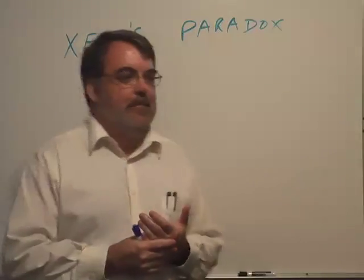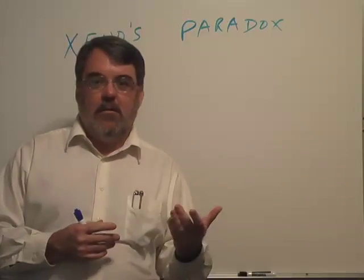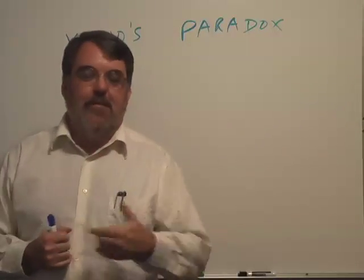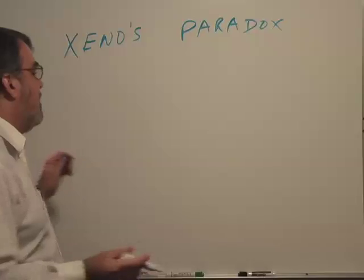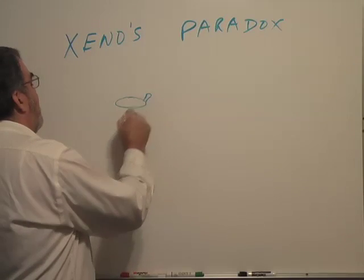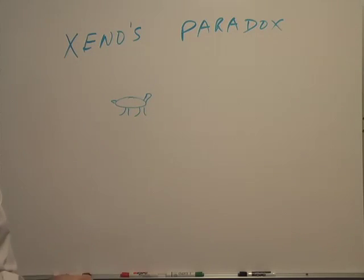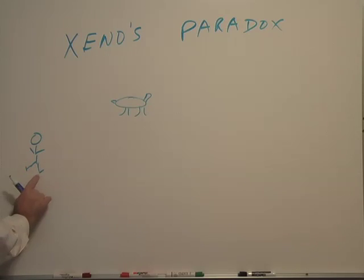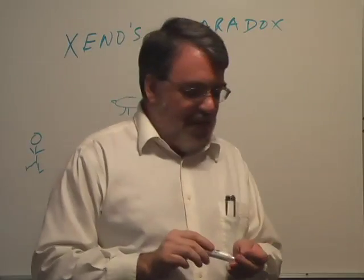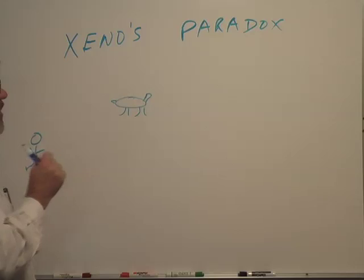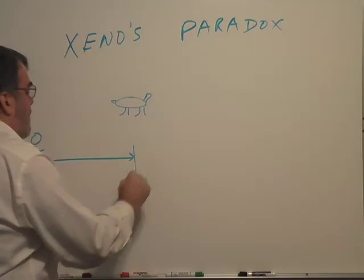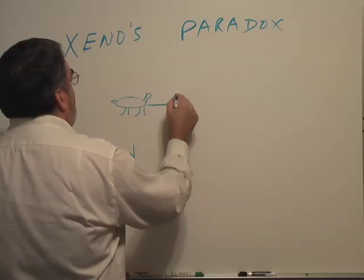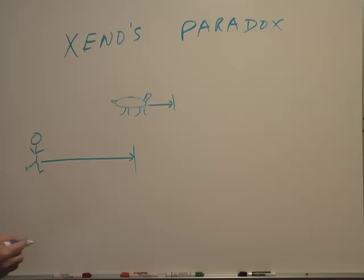Zeno made this argument: let's run a foot race between a turtle and Achilles. Achilles was the great warrior athlete, a legendary guy of the day. I am a terrible artist, so suppose this is our turtle and suppose this is Achilles — stick figures are about all I can do, although this would be Achilles' heel. We start the foot race, but Zeno says the turtle gets a head start. They begin the race and Achilles runs up to where the turtle began. Well, the turtle has moved forward — not as far, but the turtle is still ahead of Achilles.